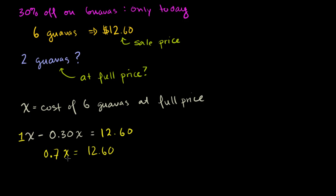And now we just have to solve for x. Divide both sides by 0.7. So you get x is equal to 12.60 divided by 0.7. We could use a calculator, but it's always good to get a little bit of practice dividing decimals. So we get 0.7 goes into 12.60. Let's multiply both of these numbers by 10. So the 0.7 becomes a 7. The 12.60 becomes 126. Put the decimal right there.